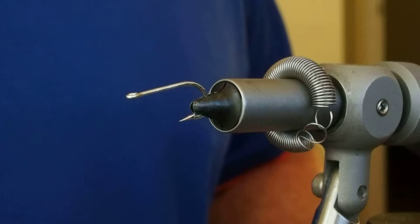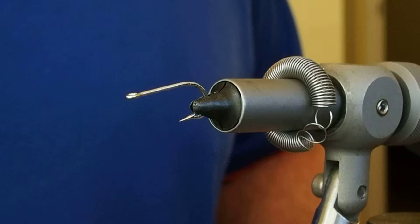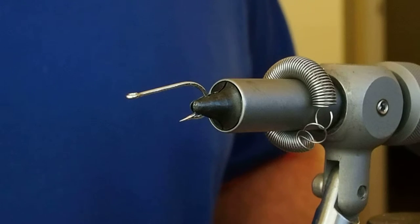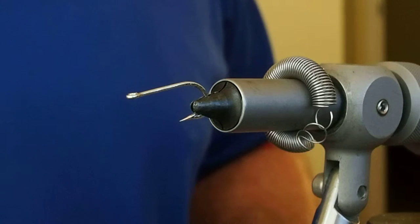The original recipe calls for a size 2 or 4 hook in a 2x or 3x length. That seems a little long to me, so I'm just going to tie this fly up on a standard length size 4 hook. In the vise I have a size 4 Mustad 34007.